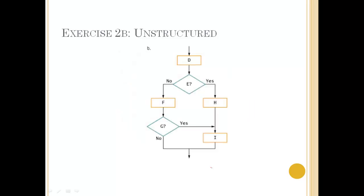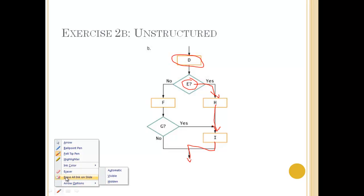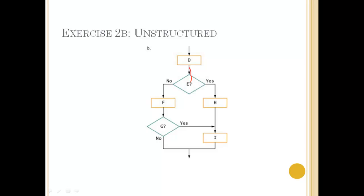Let's look at another example, a little bit more complicated. Process D sets the sentinel value and does the priming read. Decision E evaluates that sentinel value. If it evaluates to yes, we go to process H. H does whatever it does, and then H sends the logic flow down to process I. Process I does whatever it does and exits this block of structure. What happens if the sentinel value set in process D evaluates to no? Then the flow goes to process F.